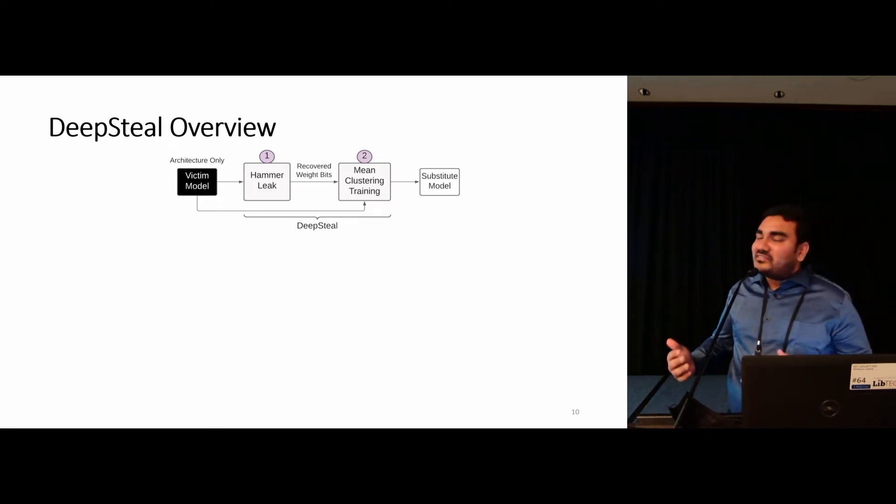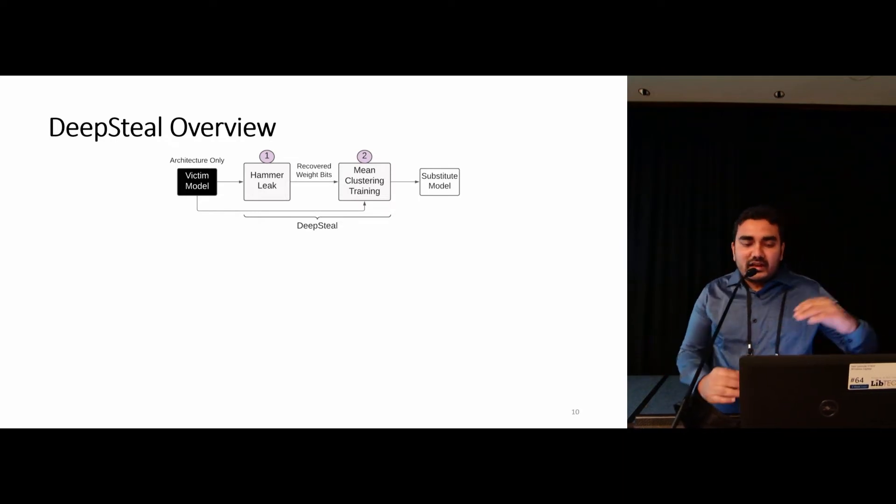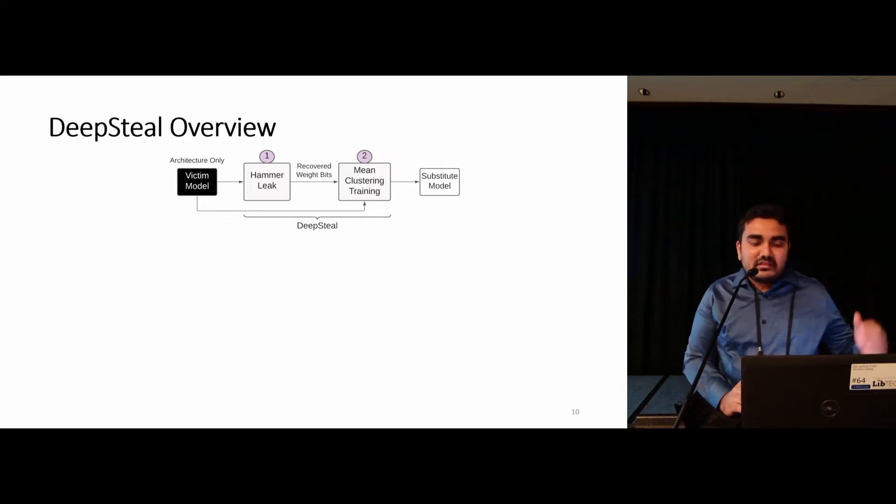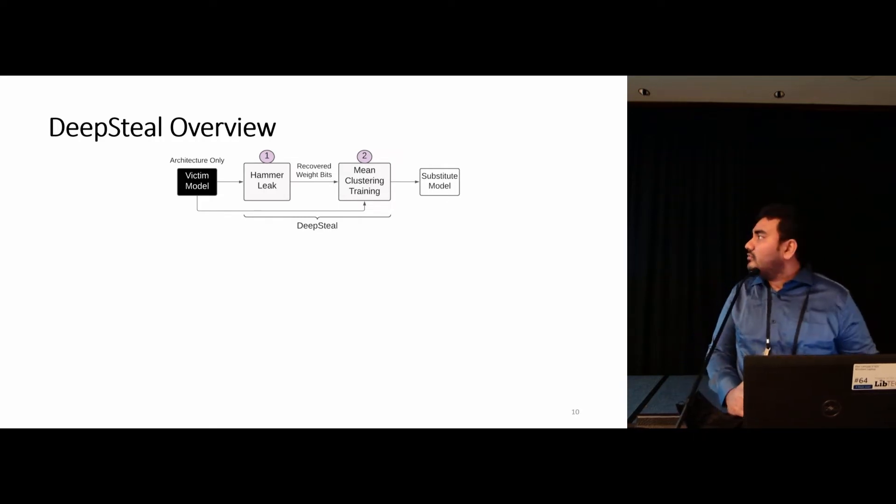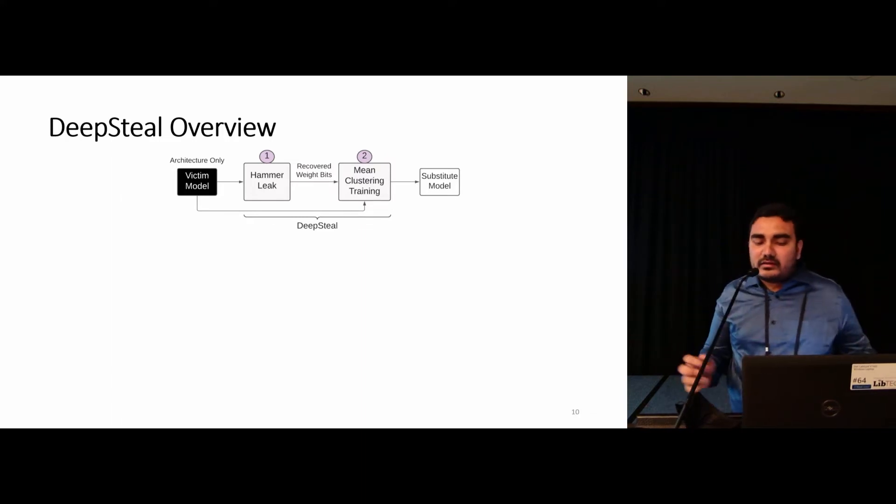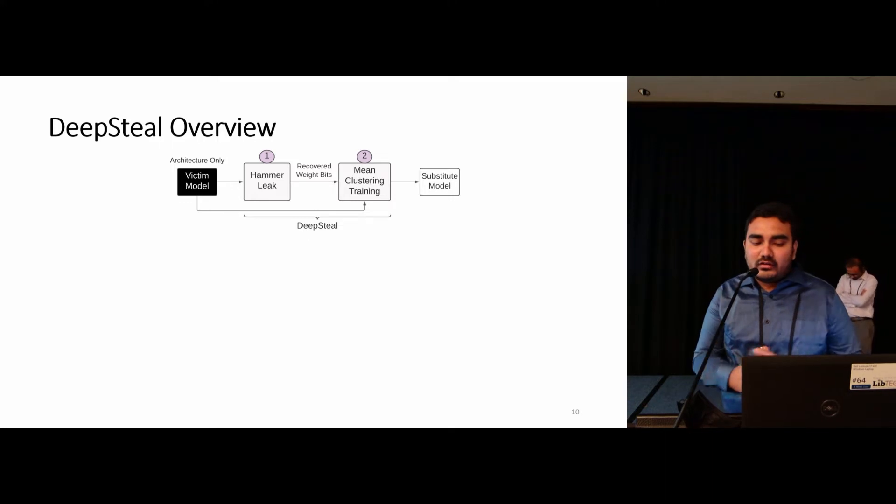Now we discuss about our attack framework, which we call DeepSteal. Here is a brief overview of our attack framework. In a higher level, our attack has two major components. The first step is a system-level exploit in which we partially recover model weight information. We call this HammerLeak. Then, based on this recovered weight, we perform mean clustering-based approximation of the weights, which we aptly call mean clustering training.